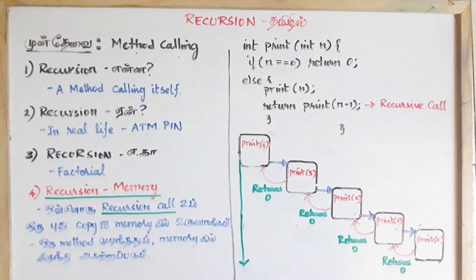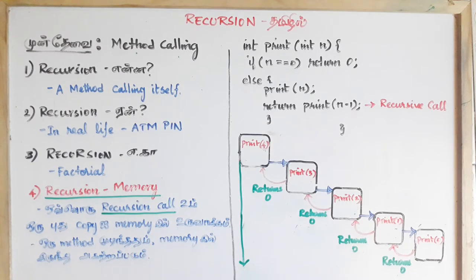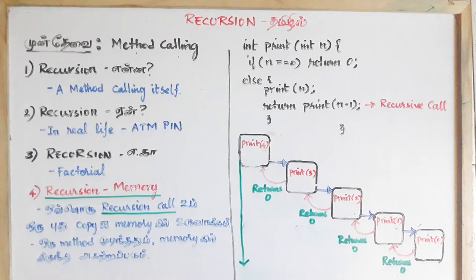This method will automatically delete the recursive call method. This is the recursive call method — this is the most important thing. I will call a method 5 times, creating a copy of every method. After the action of the method, it will automatically erase the method.